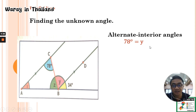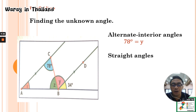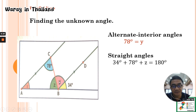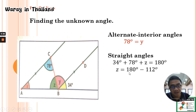Next, we find angle Z using straight angles — the sum of the three angles on a straight line equals 180 degrees. So 34 plus angle Y (which is 78) plus angle Z equals 180 degrees. Transposing, we get 180 minus 112, so angle Z equals 68 degrees.